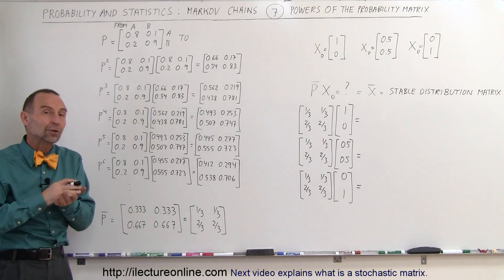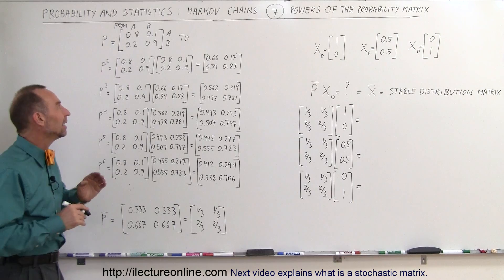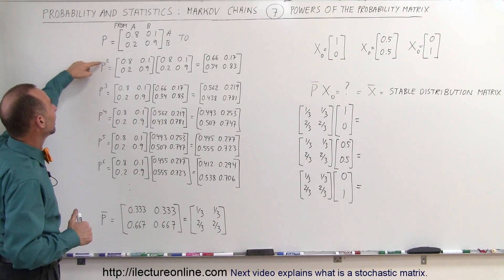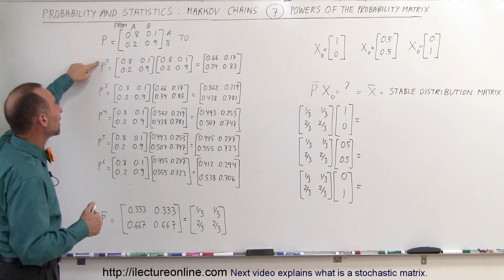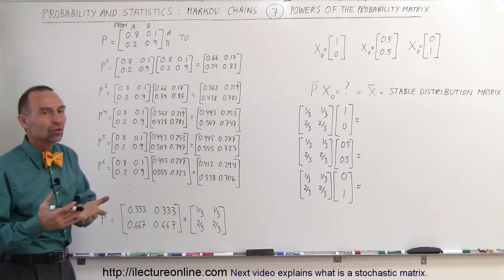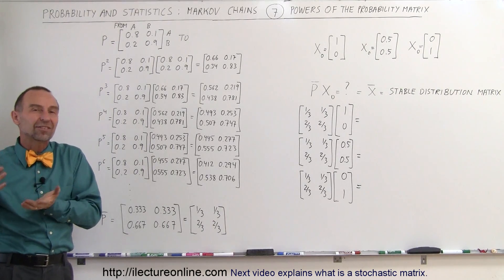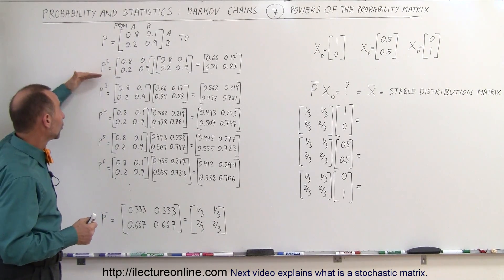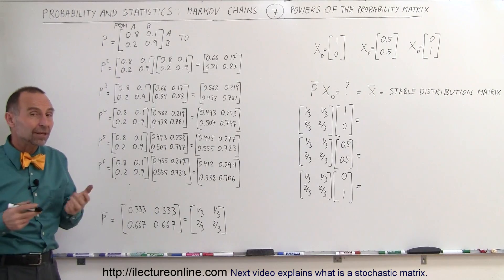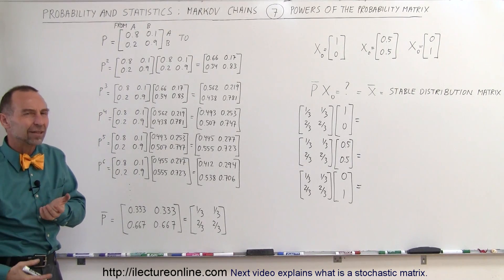Well, we saw in a previous video that one of the ways to calculate that is to go ahead and multiply a power of the probability matrix with the initial state to see what the end state will be. And of course, the greater the power of the probability matrix, the closer we get to the end state.